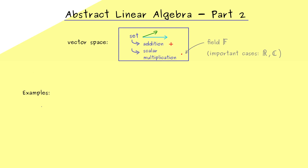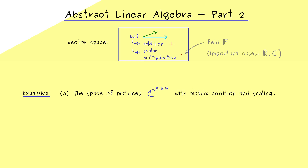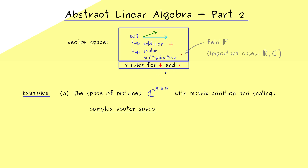The first example you should already know if you have watched my original linear algebra series. Namely we want to consider the set of matrices with m rows and n columns. If the entries can come from C, we write it as C to the power m times n. We already know how to add two matrices and how to scale one with a complex number, hence we immediately get a complex vector space. We say it's a complex vector space because the field for scaling is given by the complex numbers. To prove this is a vector space you just check the 8 rules listed in the last video. For more details you can check out the linear algebra series, parts 11 and 58.